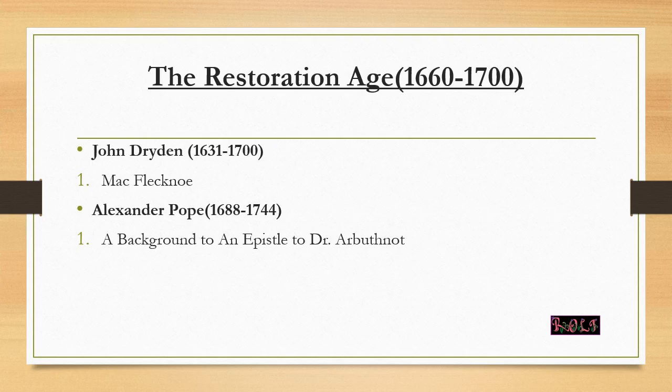The notable poets of the Augustan/neoclassical age are John Dryden and Alexander Pope. This was the period where poets started writing again about classical heroes, and both Dryden and Pope wrote in heroic couplets. The important poem of John Dryden is Mac Flecknoe. From Alexander Pope, the prescribed poem is An Epistle to Dr. Arbuthnot, and another very notable poem is The Rape of the Lock.